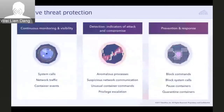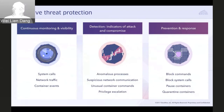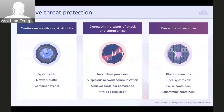When we talk about adaptive threat protection in the context of StackRox, that encompasses a set of unique capabilities. We start by continuously monitoring data at the level of system calls, network traffic, and container events. This detailed visibility allows us to use machine learning to create high-fidelity threat models, which are used to discern various indicators of attack and compromise, including anomalous processes, suspicious network communications, unusual container commands, or privilege escalation.